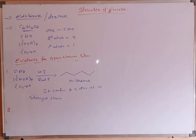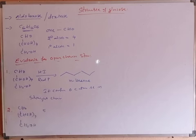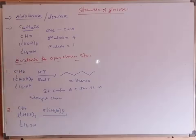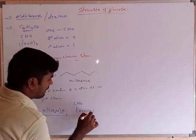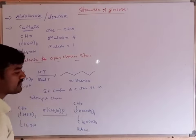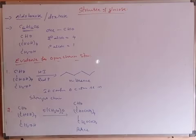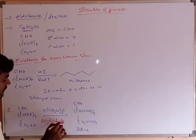The second evidence is the presence of OH groups. Glucose reacts with five moles of acetic anhydride to form penta-acetyl glucose. The formation of penta-acetyl glucose indicates that five OH groups are present in the open chain structure of glucose. This reaction is called acetylation of glucose, where the five OH groups are replaced by acetate groups.